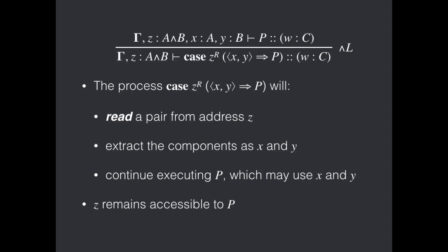So, dually to the right, we need to have a read, and we use this case construct to do that read. And as one might expect, this reads a pair from address Z, extracts the components as X and Y in a form of pattern matching, and continues executing the process P, which may make reference to X and Y, and may in fact read from them in the future. And also, Z remains accessible to P, P may go and read from the cell Z again, although it's redundant in this case.